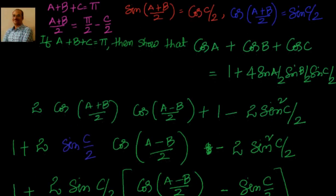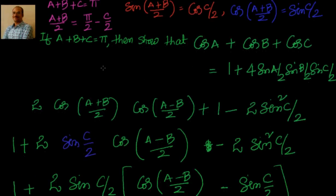So, in the last 2 videos we have seen, if a, b, c are angles of a triangle — initially we saw cases with 2A, then with A. Now let us see what will happen with sin(a/2) plus sin(b/2) plus sin(c/2), or cos(a/2) plus cos(b/2) plus cos(c/2). That we will see in the next video. Thanks for visiting, bye for now.